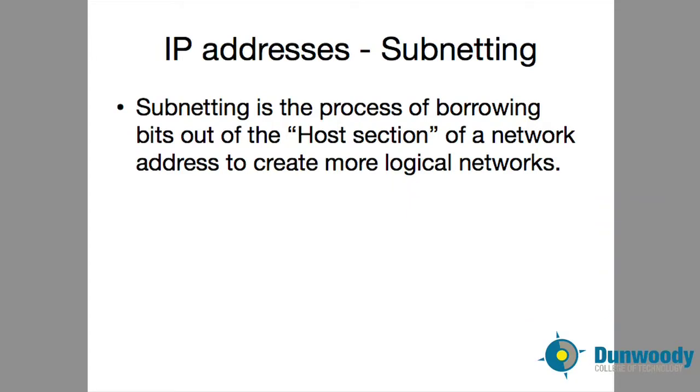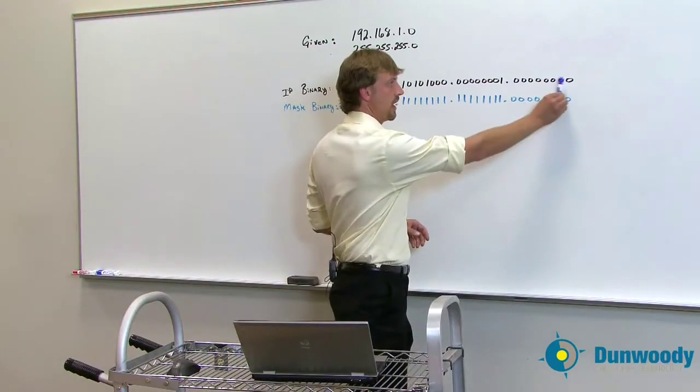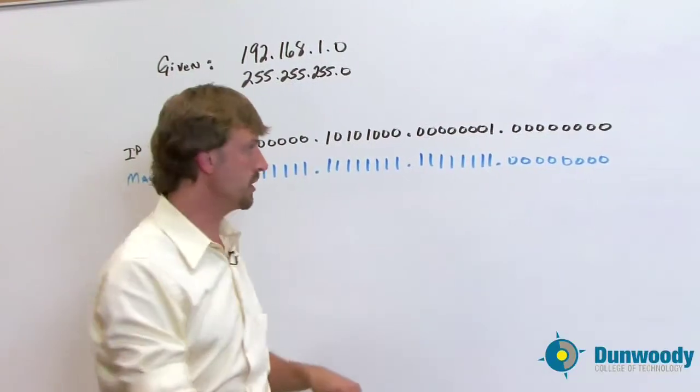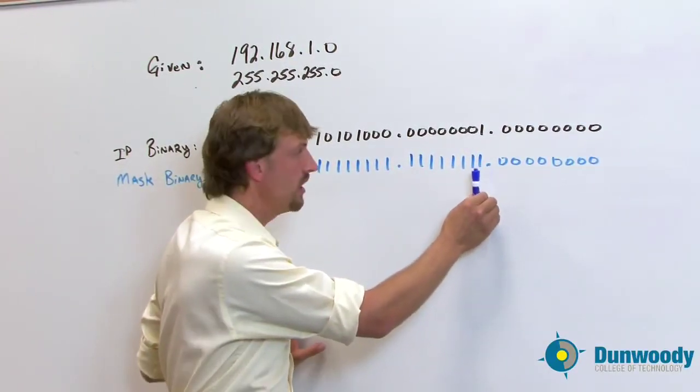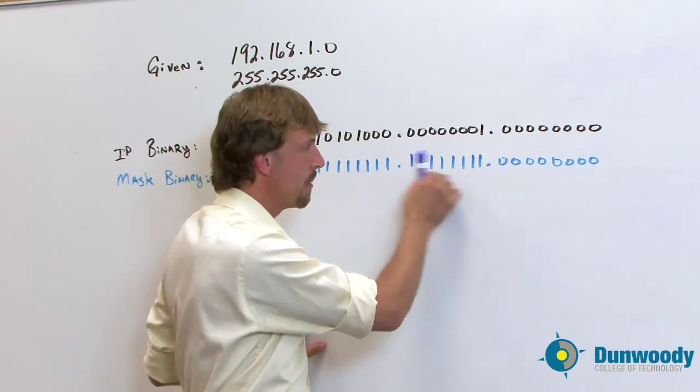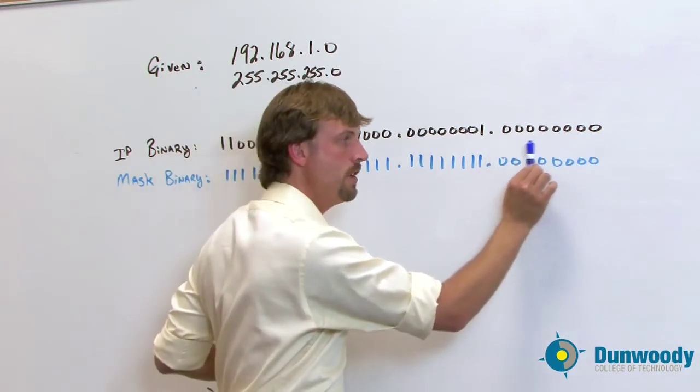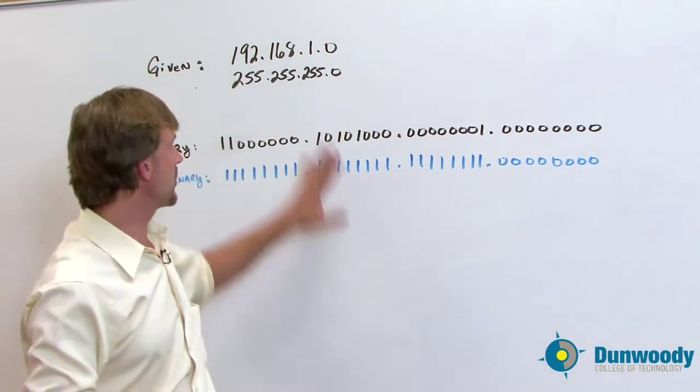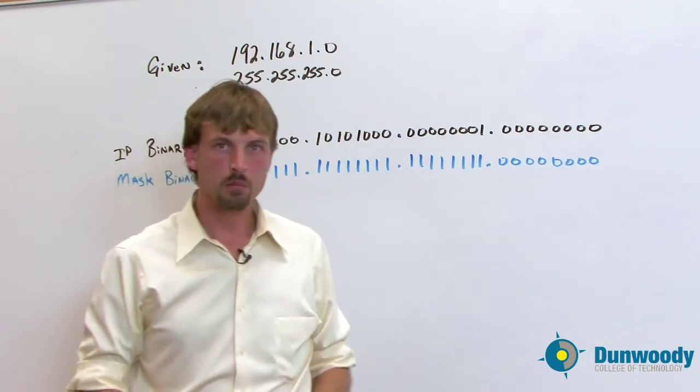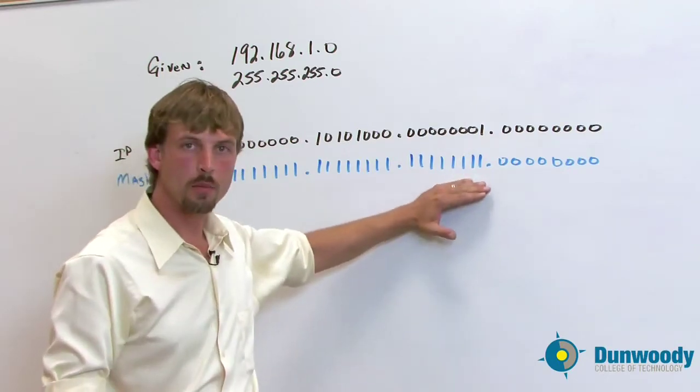So subnetting is the process of borrowing bits out of the host section of an IP address. And this is the host section out here. So what we're actually going to do is we have this really nice dividing line here right now. We're going to change that. We're going to take this dividing line of our mask that tells us this is the network and this is the host and move it over a little bit and kind of blur the line some. It makes all of the decimal stuff look kind of weird and blurry and doesn't make a lot of sense unless you understand what's going on at the binary level.